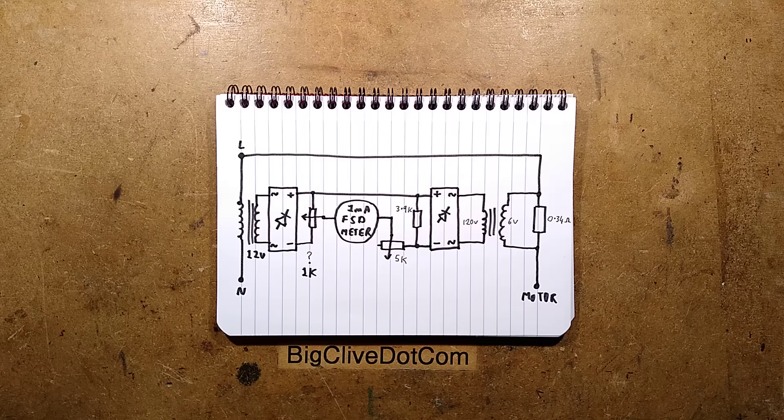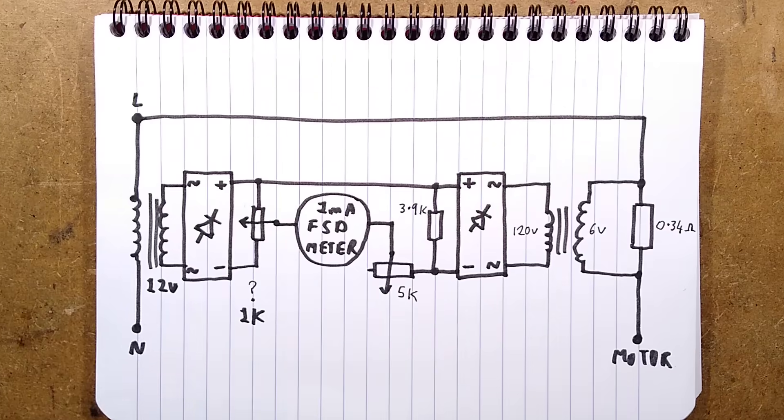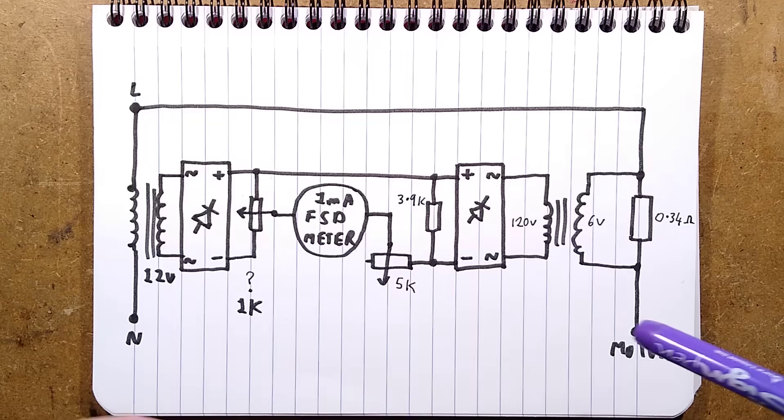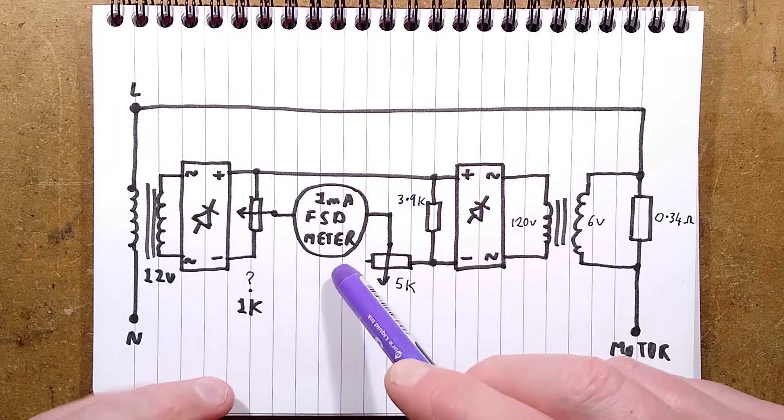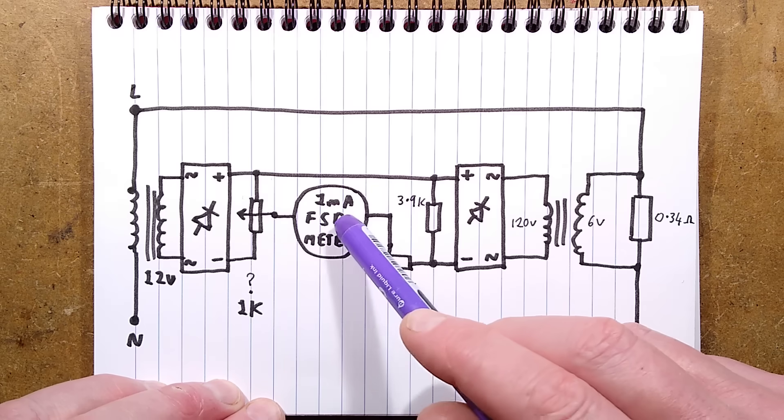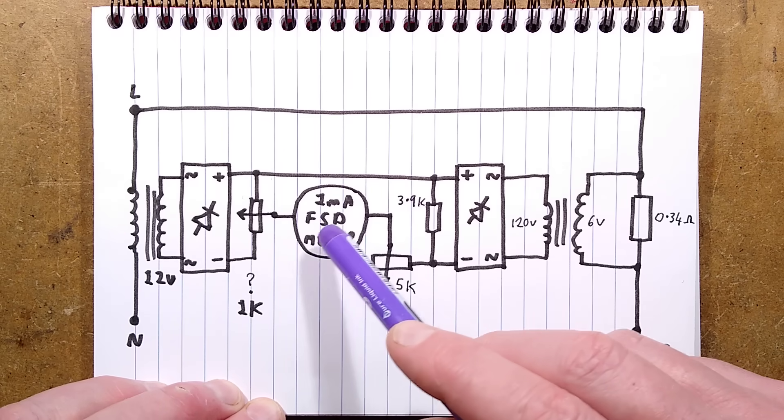I shall zoom down - this is very retro, as you saw from the style of circuit board there. It looks like it's homemade. Let's just double-check this is super focused. So here's the motor, the meter, and it's a 1 milliamp FSD meter. FSD stands for full scale deflection.